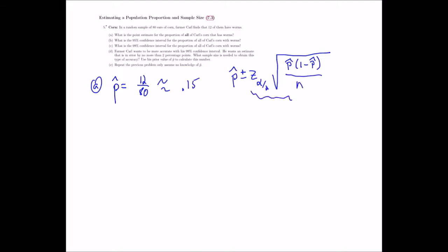To get that, I should look at the z-score table. For a 95% confidence interval, I want to use z equals 1.96. So I'm going to start setting this up. I'll do 0.15 as my p-hat.